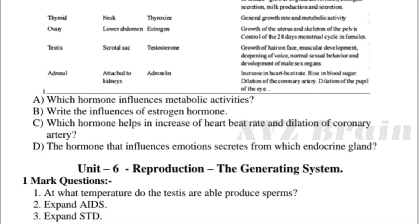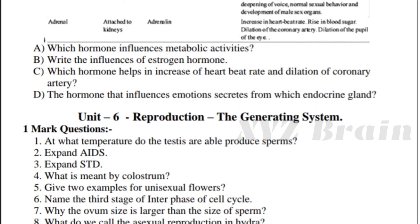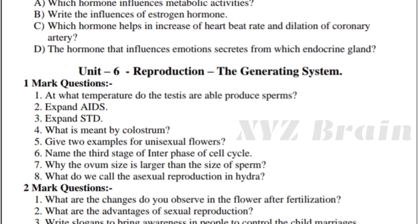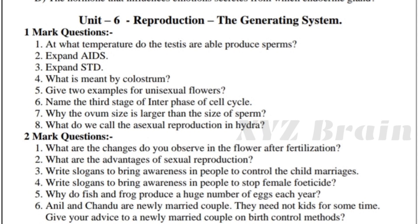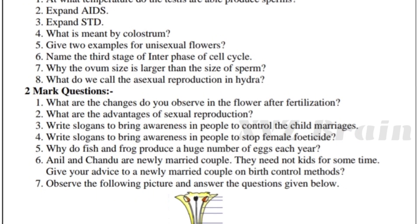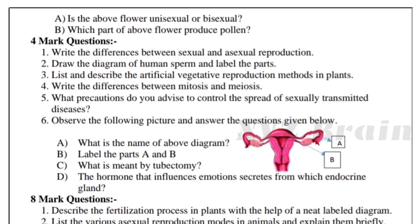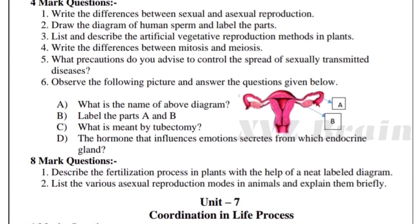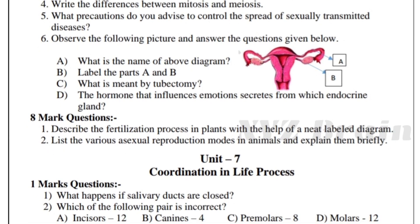We have male and female diagrams. Expand AIDS, expand STD, ASHA birth control methods, fertilization, and advantages of sexual reproduction. Child birth control, child marriage slogans. Flower parts and identification. For 4 marks: female reproductive diagram. For 8 marks: fertilization, endosperm, asexual reproduction methods like grafting and layering.